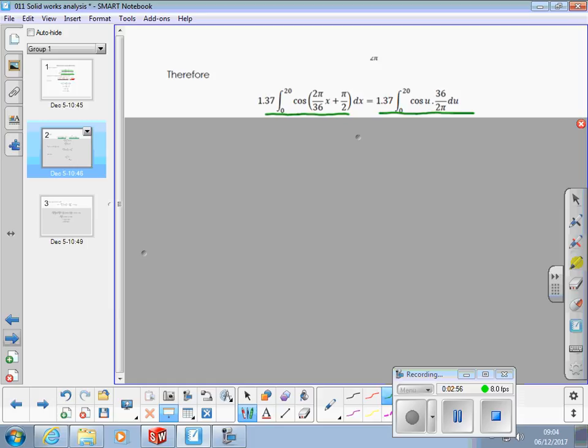So, for this bit, I've substituted u, and for that bit, I've substituted 36 over 2 pi times du. Because if u is the variable now, that's got to be in terms of u.